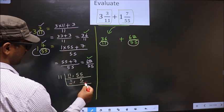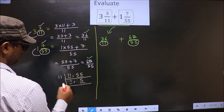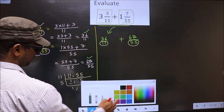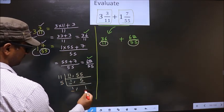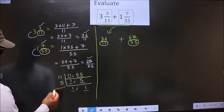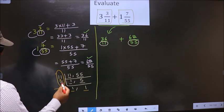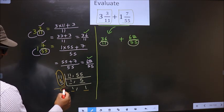Now, here we got 1, so focus on the other number, that is 5. 5 is a prime number, so 5 once is 5. Now, we got 1 in both places. So, our LCM is the product of these numbers, that is 11 into 5, which is 55.